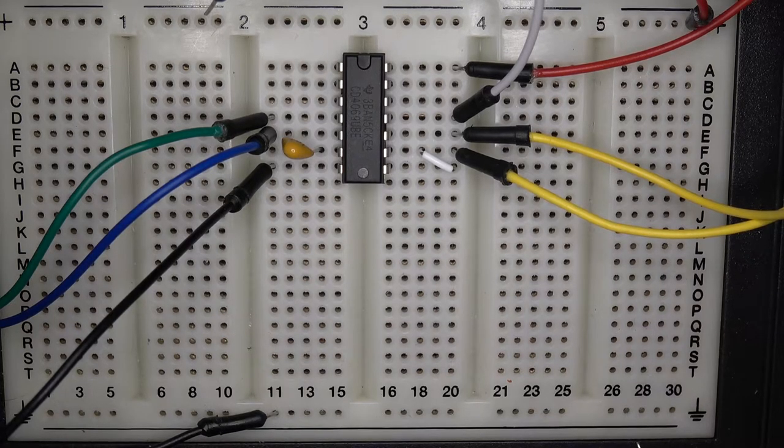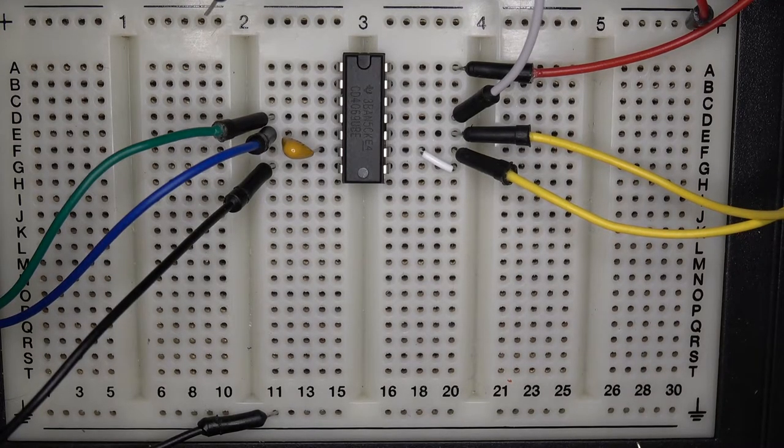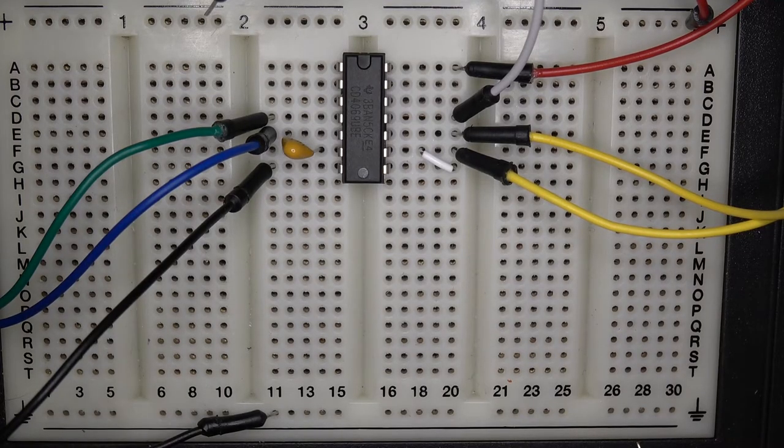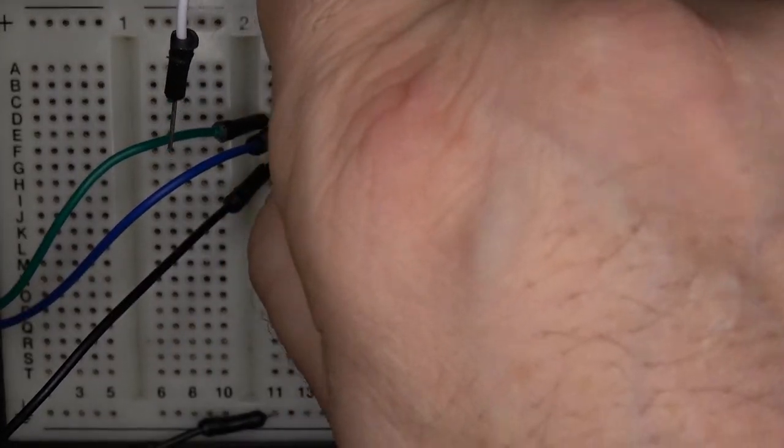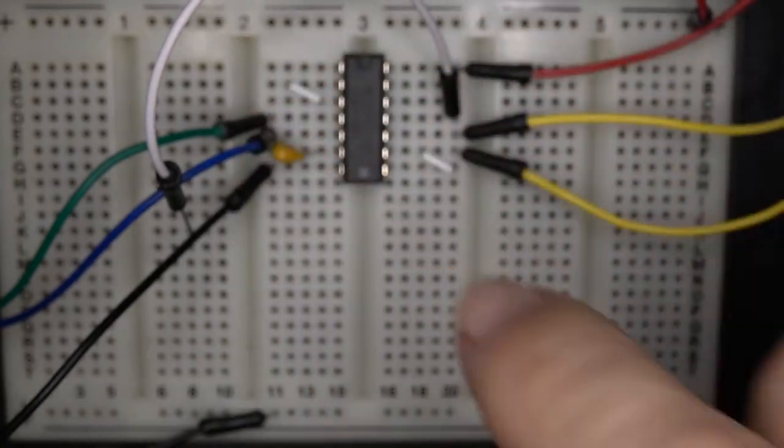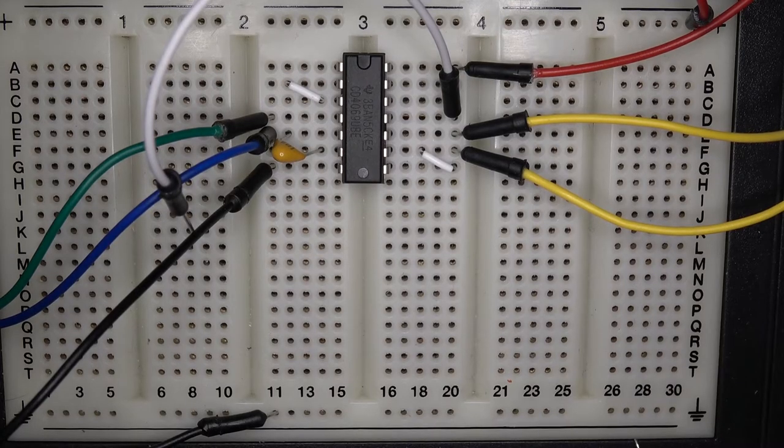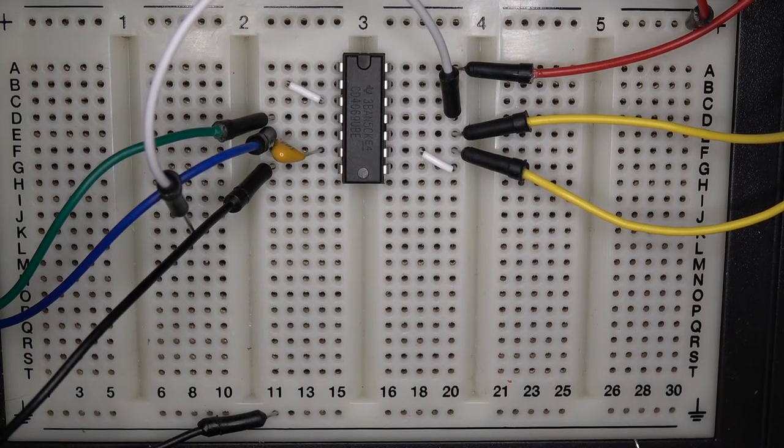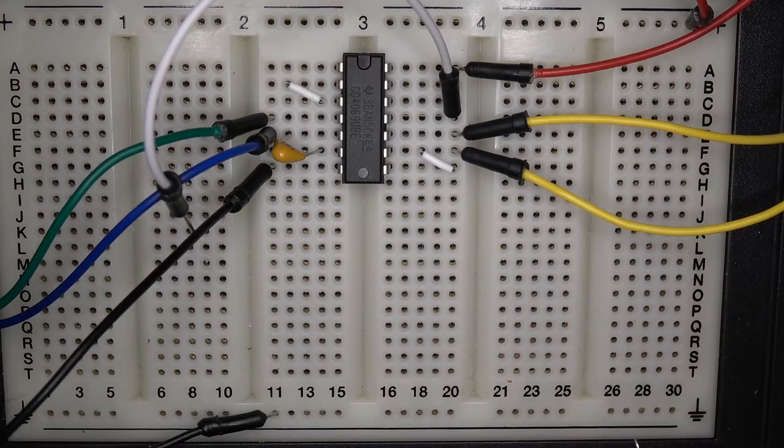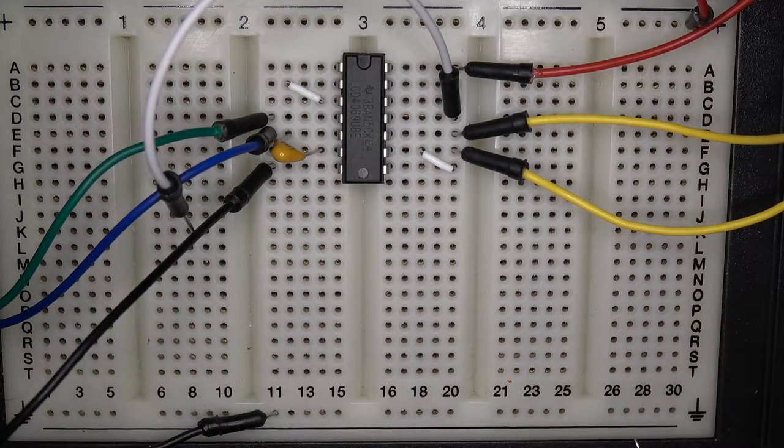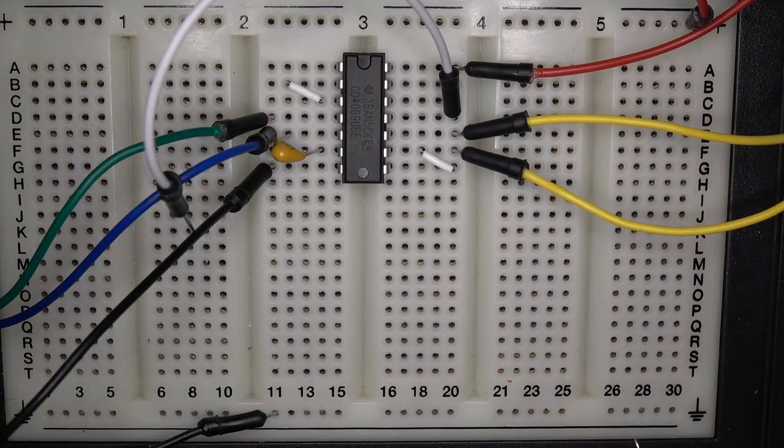We're going to do that by putting two amplifiers in a row, two of these inverting amplifiers in a row. The output on pin 2 goes to the input of the next one on pin 3. We'll use two resistors to control. That's a kind of analog to digital converter we've made, because we're going to have these analog ramps go inside, but the output of those two inverters in a row is going to either be 9 volts or ground.